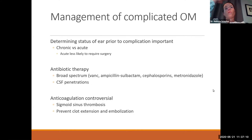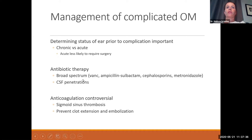When thinking about complications, the most important thing is determining the status of the ear prior to the complication. Chronic ears that develop complications are very different from acute otitis media with a complication — acute is less likely to require surgery or requires a lower level of surgical intervention. Antibiotic therapy is critical: broad-spectrum antibiotics first, because there can be many resistant organisms. You also want something that crosses the blood-brain barrier — vancomycin, cephalosporins, and Flagyl are often used.